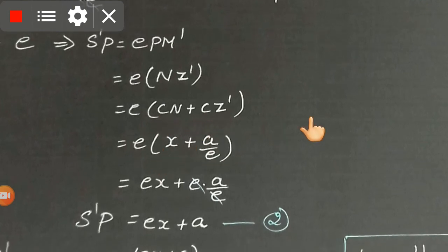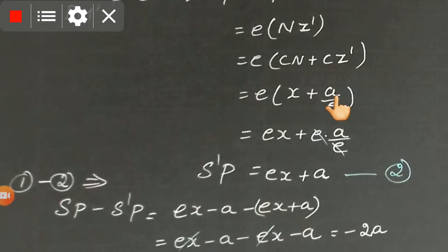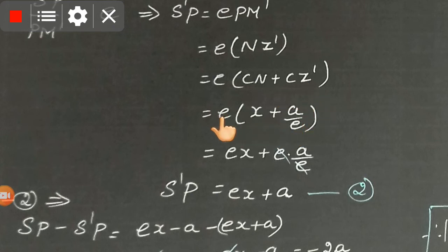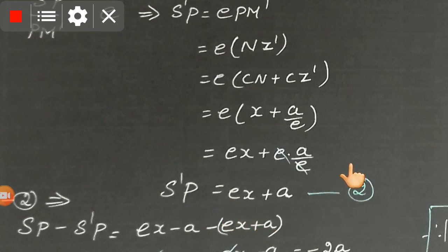CN is the horizontal distance from center to N, which equals x, because the point is P(x, y). CZ' is the distance from center to Z', which is a/e. Bring e inside the bracket: e times x plus e times (a/e), cancel e and e, so we get ex plus a. Therefore S'P equals ex plus a. Name this as Equation 2.